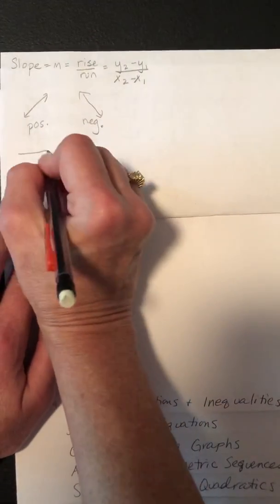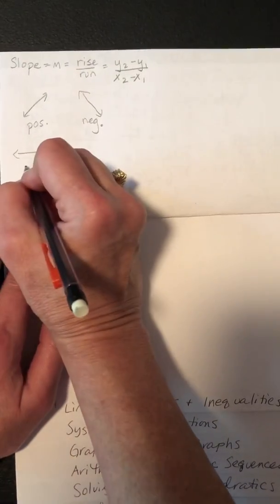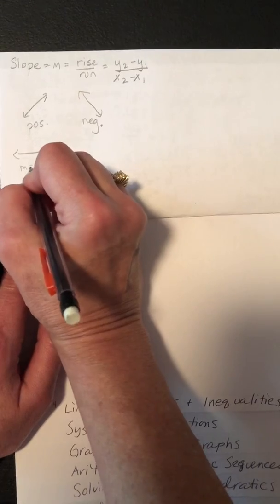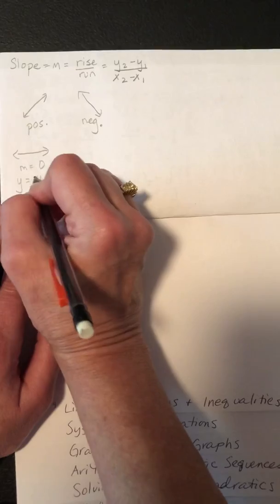There's ones that are completely flat, and if you go skiing on a flat surface, it's zero amount of fun. So M equals zero. And remember, that is y equaling a number.